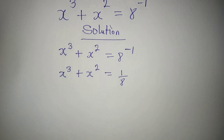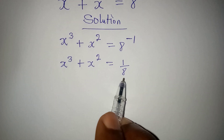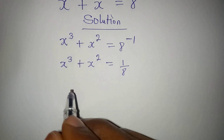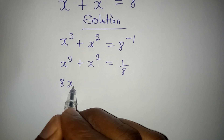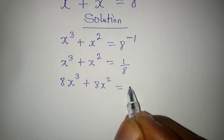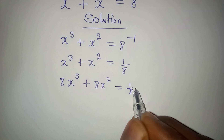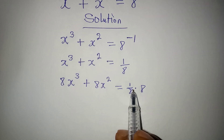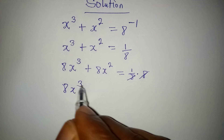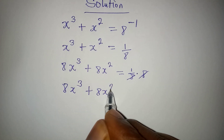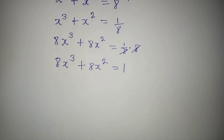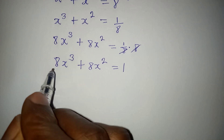According to one of the laws of indices, the next step is to clear the fraction by multiplying everything by 8. So we have 8x³ plus 8x² equals 1 over 8 times 8, and this cancels, giving us 8x³ plus 8x² equals 1.